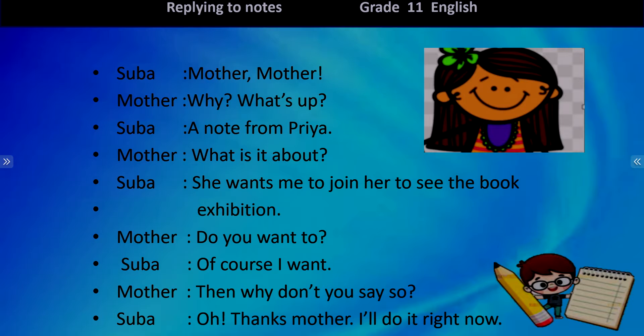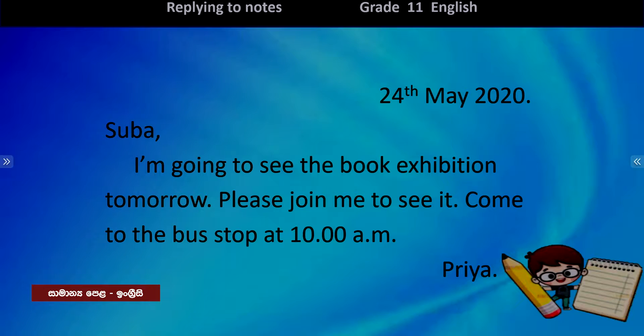In this conversation, you noticed that Subha and her mother were talking about a note. She has received a note from her friend Priya. Let's go to the next slide and see what Priya has written. She has written it on the 24th of May 2020 and she says: 'Subha, I'm going to see the book exhibition tomorrow. Please join me to see it. Come to the bus stop at 10 a.m. Priya.'